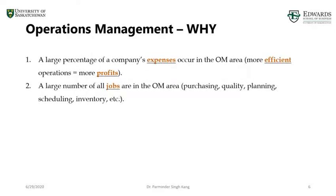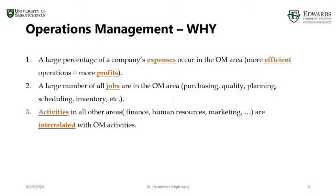A large number of jobs exist in the OM area, either directly or indirectly related to operations management. Some examples include purchasing manager, purchasers, quality control manager, planners, and scheduling staff — they all work to ensure operations are running effectively and efficiently. Activities in all other areas interrelate with OM — finance, human resources, marketing, and so on. We'll explore this in the coming slides, looking at the different functions within the organization and how they support operations management.